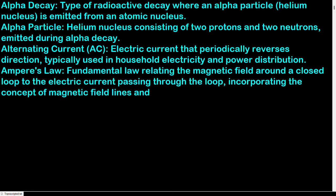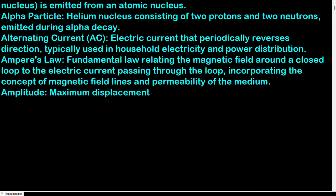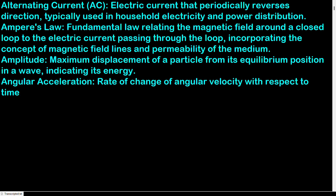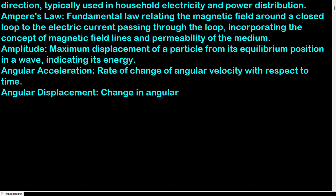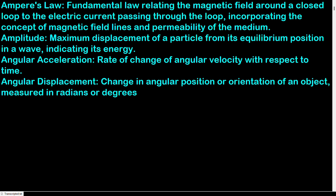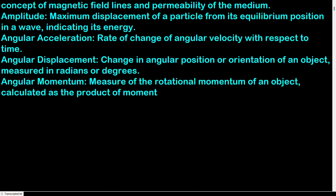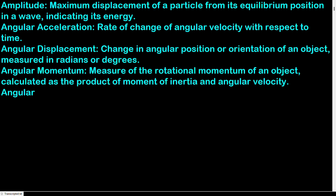Ampere's law: fundamental law relating the magnetic field around a closed loop to the electric current passing through the loop, incorporating magnetic field lines and permeability of the medium. Amplitude: maximum displacement of a particle from its equilibrium position in a wave, indicating its energy. Angular acceleration: rate of change of angular velocity with respect to time. Angular displacement: change in angular position of an object, measured in radians or degrees.